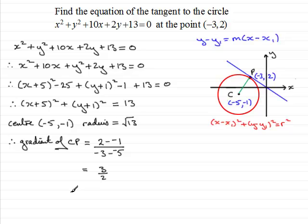Now we know that the product of this gradient with the tangent is minus 1. So what that means is that therefore the gradient of the tangent is now going to be equal to minus 2 thirds. Simply just turn your fraction upside down and change the sign that you get. And if you multiply these two together, you will get negative 1.